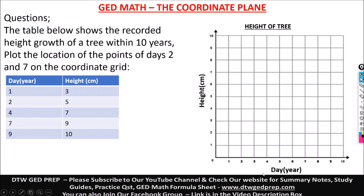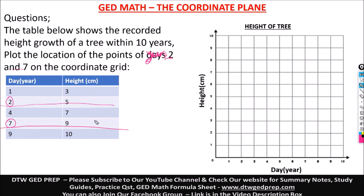Here you also have to understand your coordinate grid. From the label, this is the subject of the grid: height of the tree. This axis — which is the y-axis on the normal coordinate grid — is the height in centimeter, while this horizontal axis is day in year. So our vertical is height in centimeter. We have to plot according to what we have on our axis, on these locations. It says to plot the location of the points of days two and seven. From our table we also have to understand our table — year two is this and year seven is this, so we have to plot this point and this point.